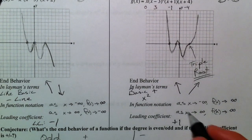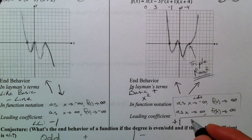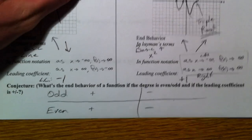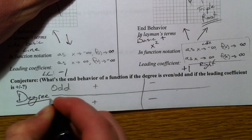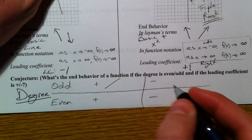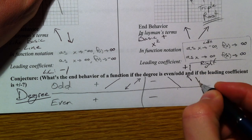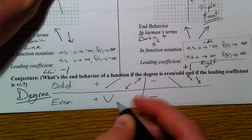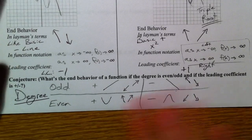What I want you to get is: if it's an odd degree, it behaves like your basic line — positive line goes up to the right and down to the left, negative line goes up to the left and down to the right. If it's even, think basic parabola — if the leading coefficient is positive, it opens up, so up to the left and up to the right. If it's negative, it opens down — down to the left and down to the right. So let's put this into action.